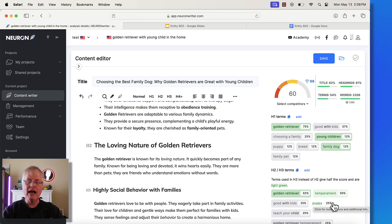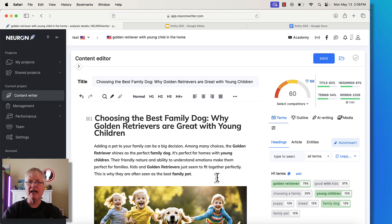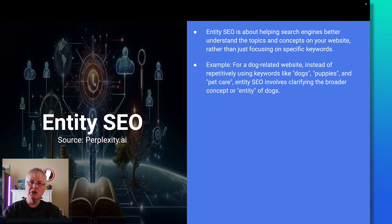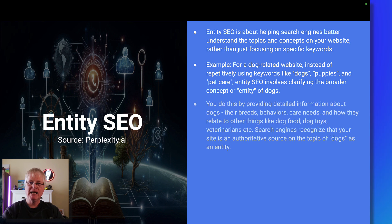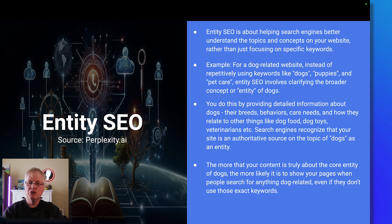With any article generated with AI, you want to go in, fact check it, and make sure to add your personal expertise. Just remember that entities help search engines better understand the concept of your website and what it's all about. You can use broader concepts and broader terms for your niche rather than always keyword stuffing your pages. Search engines start to recognize your site as an authoritative source on your topic — the more your content is truly about the core entity of your niche, the more likely search engines are to show those pages to people searching for related topics.